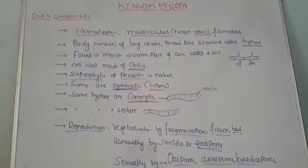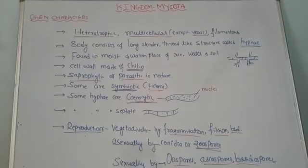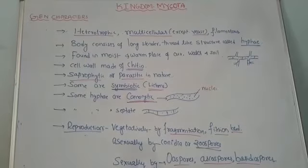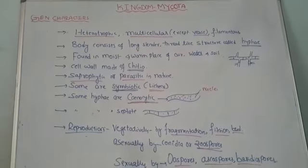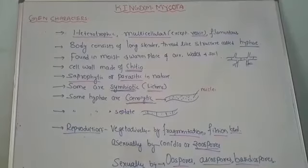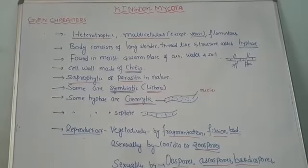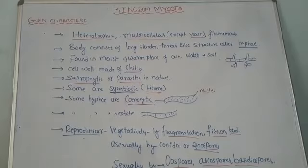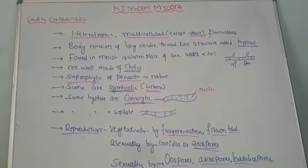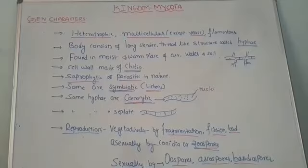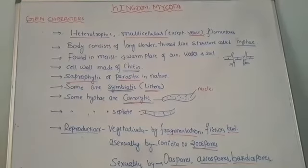Hello students. Now we will move towards the next kingdom. After the completion of Kingdom Protista — the detailed classification of which we completed in the previous video — the last remaining kingdom is Kingdom Mykota. Kingdom Mykota consists of all fungi; all fungal members are included under it. According to R.H. Whittaker's five-kingdom classification, Mykota is one of the included groups. Let us understand some of the most important general features of Kingdom Mykota.